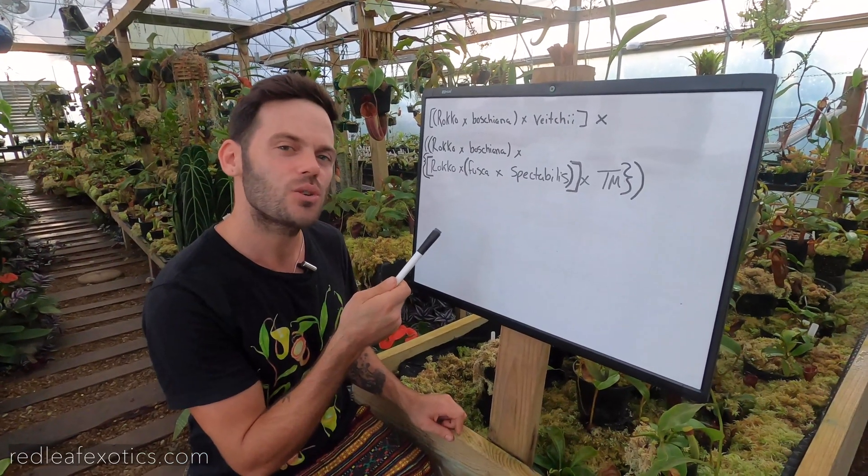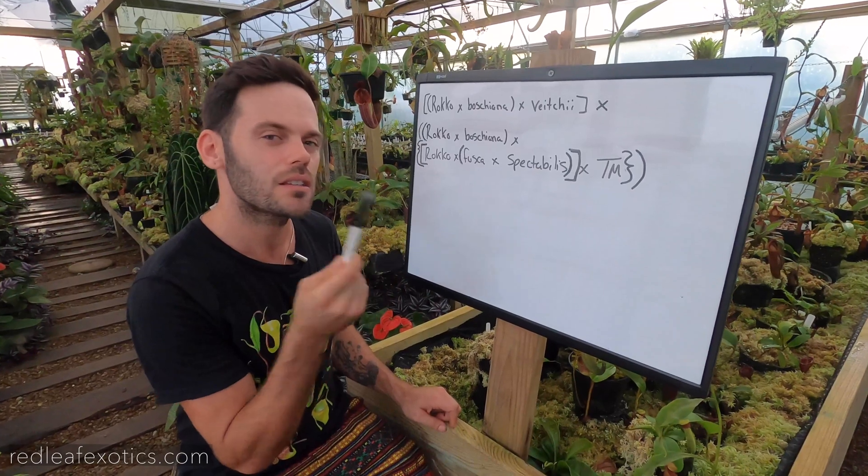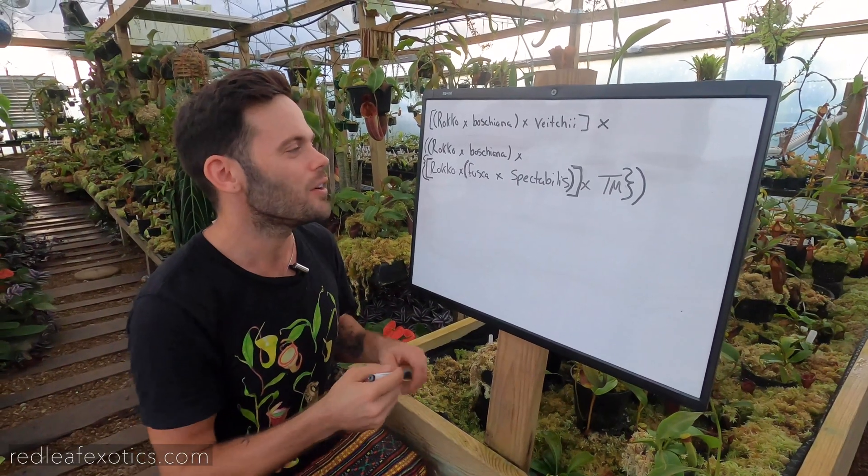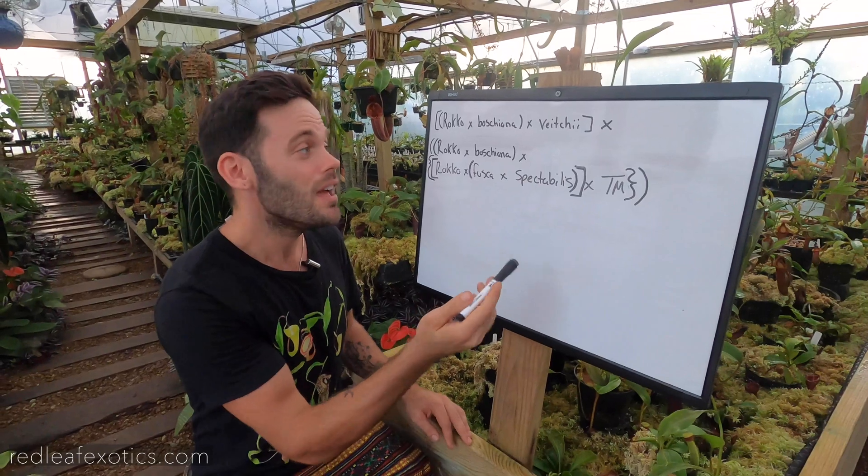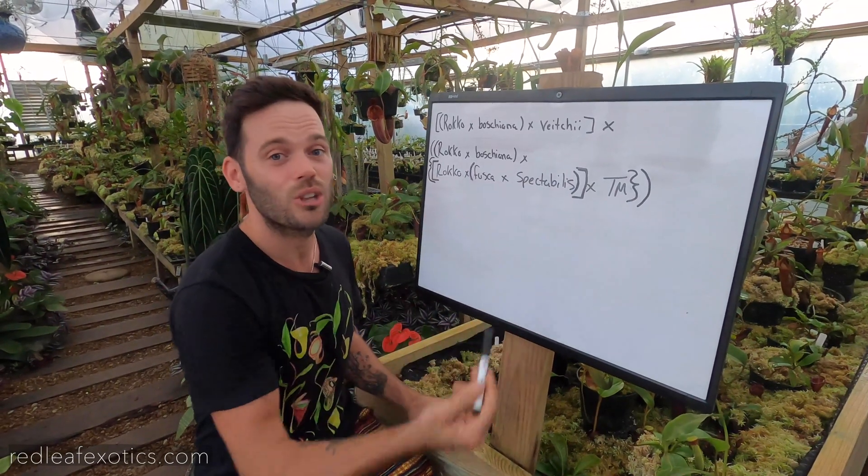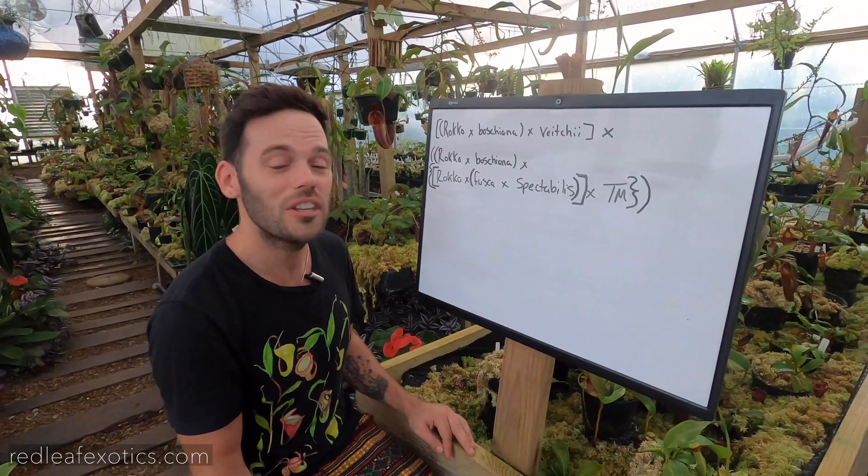I wish I knew this in high school, even though I was growing Nepenthes, did not put two and two together on the order of operations. But if you've ever seen a Nepenthes name that looks like this, and you're like, what is going on there?